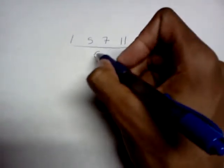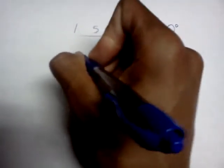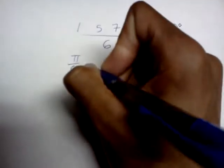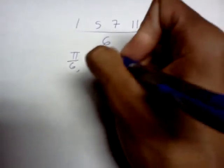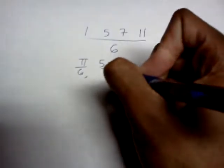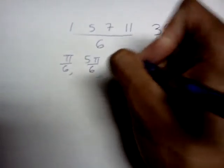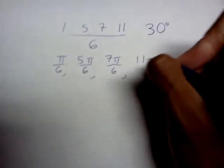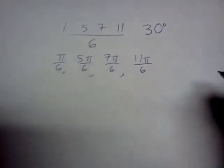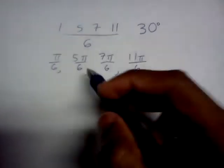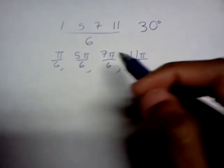And if we multiply it by pi, or everything by pi, or we just add like a pi in, we get pi over 6 for the first quadrant, 5 pi over 6 for the second quadrant, 7 pi over 6 for the third quadrant, and 11 pi over 6 for the fourth quadrant. So those are the radians for 30 degrees.